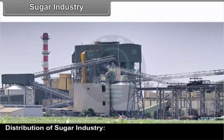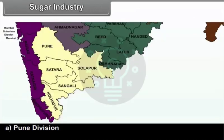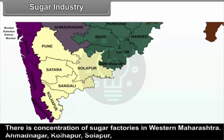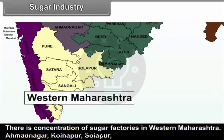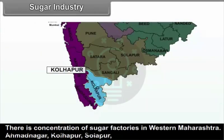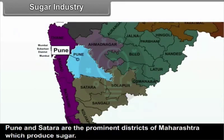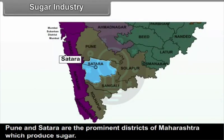Distribution of sugar industry: A. Pune Division — There is a concentration of sugar factories in Western Maharashtra. Ahmednagar, Kolhapur, Solapur, Pune and Satara are the prominent districts of Maharashtra which produce sugar. B. Nasik Division — Sugarcane is produced in the Tapi Basin. Therefore, sugarcane is available on a large scale to the sugar industry. Sugar industries are set up in Dhule, Jalgaon and Nandurbar districts.